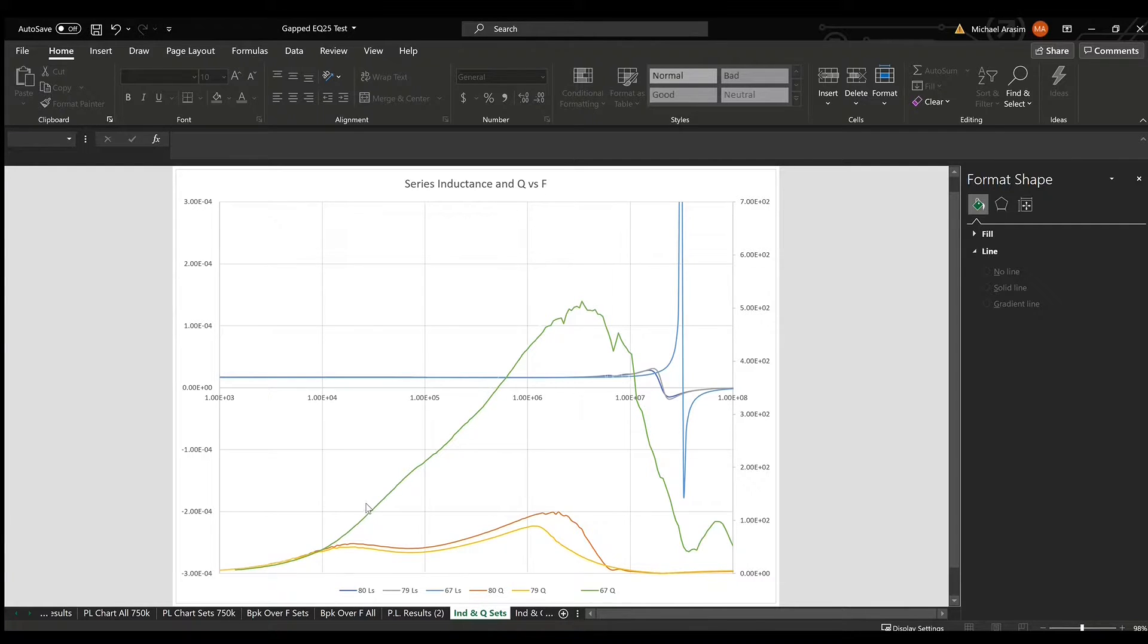And what we're looking at here is our quality factor. So this green line here is our 67 material core set quality factor. And we would typically, not that there's a direct correlation, but there generally is some trend of having a higher quality factor at a given frequency and equating to lower power losses. So we see our 67 material set here has, by far and away at our test frequencies, the highest quality factor. And then our 80 material and 79 material sets are pretty similar to one another, with a slight edge given to the 80 material set. So let's take a look at what that translated to in terms of power loss.